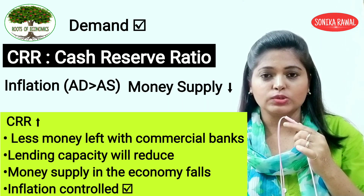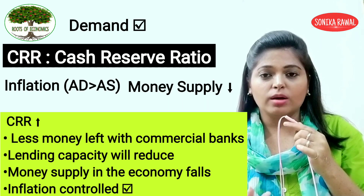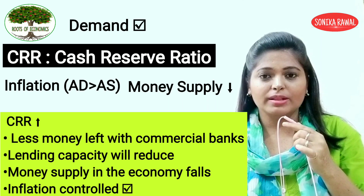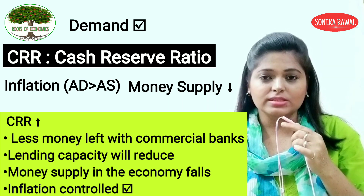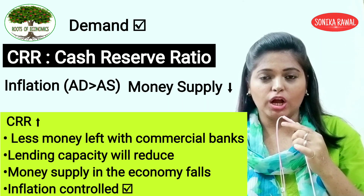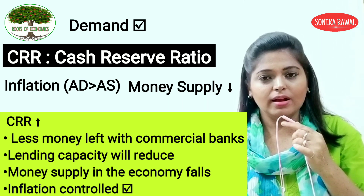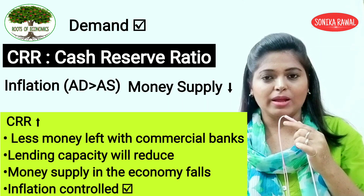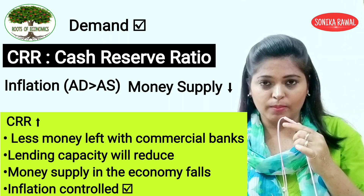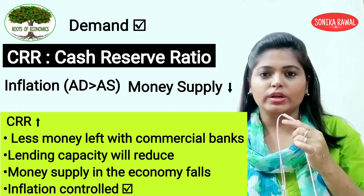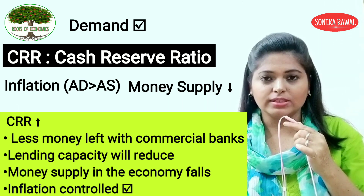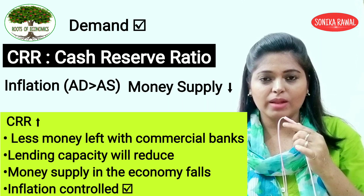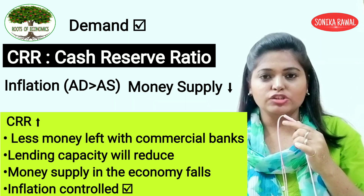When CRR is increased, commercial banks have to keep more money with the central bank. This means commercial banks have less cash available, so they will give less loans to the public. As a result, the money supply in the economy is reduced, demand will decrease automatically, and this is exactly what we wanted — to reduce the excess demand that was causing inflation. So the instrument we used is the Cash Reserve Ratio — we increased it to control inflation.